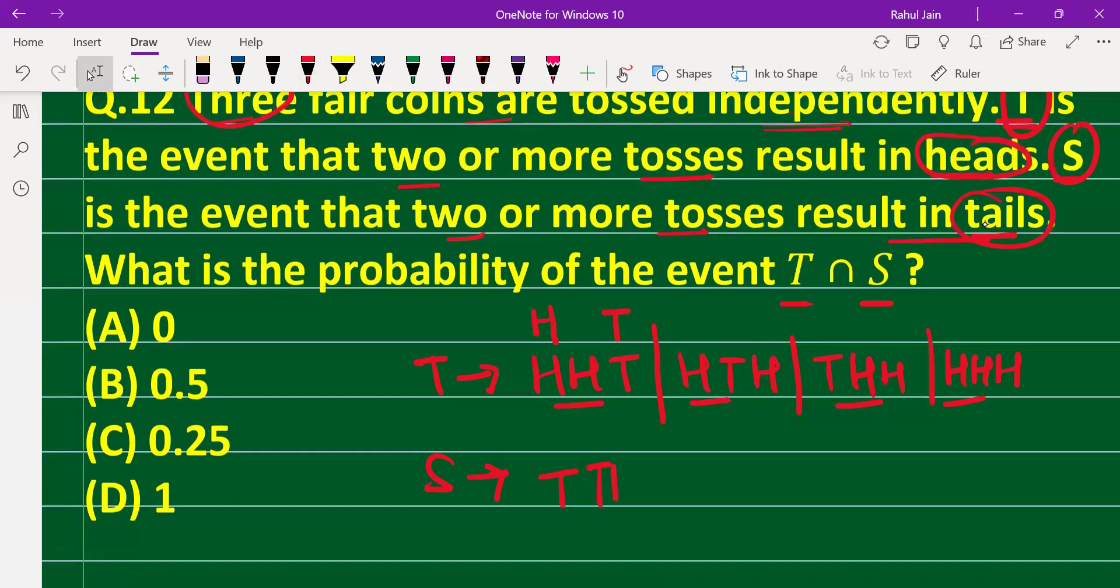Now, what is T ∩ S? If you perform the intersection operation between them, obviously at a time either event T can take place or event S can take place, but both events cannot take place at the same time. Due to this, the intersection will be zero.